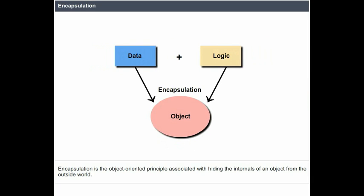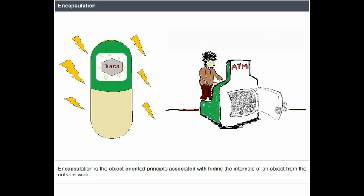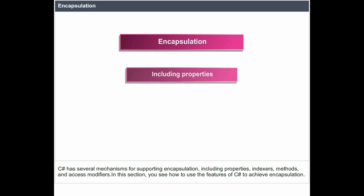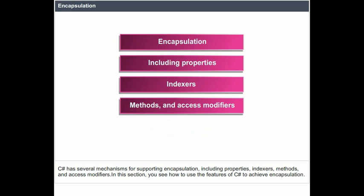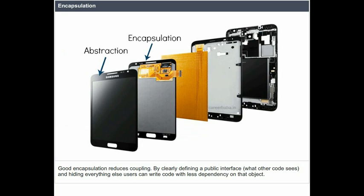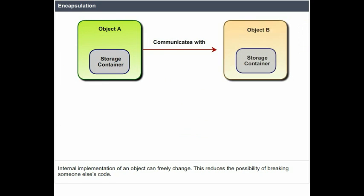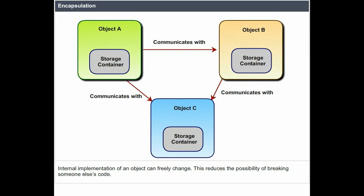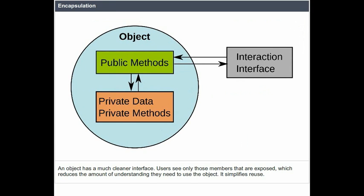Encapsulation is the object-oriented principle associated with hiding the internals of an object from the outside world. C# has several mechanisms for supporting encapsulation, including properties, indexes, methods, and access modifiers. Good encapsulation reduces coupling. By clearly defining a public interface — what other code sees — and hiding everything else, users can write code with less dependency on that object. The internal implementation of an object can freely change, reducing the possibility of breaking someone else's code. An object has a much cleaner interface; users see only those members that are exposed, which simplifies reuse.